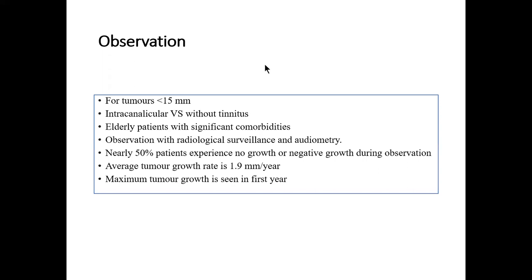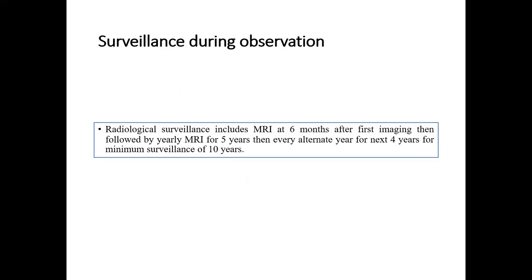When planning for observation, consider tumors less than 10–15 mm, intracanalicular vestibular schwannoma without tinnitus, and elderly patients with significant comorbidities — observation with radiological surveillance and audiometry is appropriate. Nearly 50% experience no growth or negative growth during observation. Average tumor growth is approximately 1.9 mm per year, and maximum growth is seen in the first year. Surveillance includes MRI six months after first imaging, then yearly MRI for five years, then every alternate year for the next four years — minimum surveillance period is 10 years.